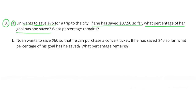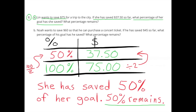Problem 8a: Lynn wants to save $75 for a trip to the city. If she has saved $37.50 so far, what percentage of her goal has she saved? What percentage remains? 100% of her goal is $75. She has already saved $37.50 — I noticed that's half of $75. 75 ÷ 2 = $37.50, so I divide 100% by 2: 100 ÷ 2 = 50%. So $37.50 represents 50% of her goal. She has saved 50% and 50% remains.